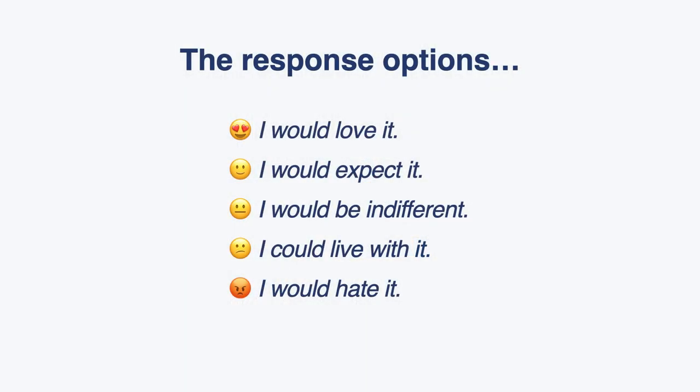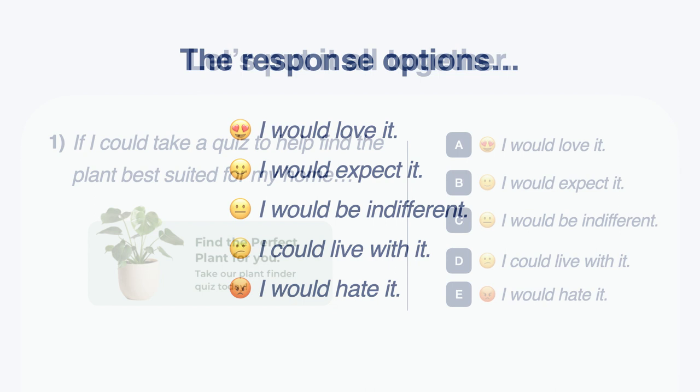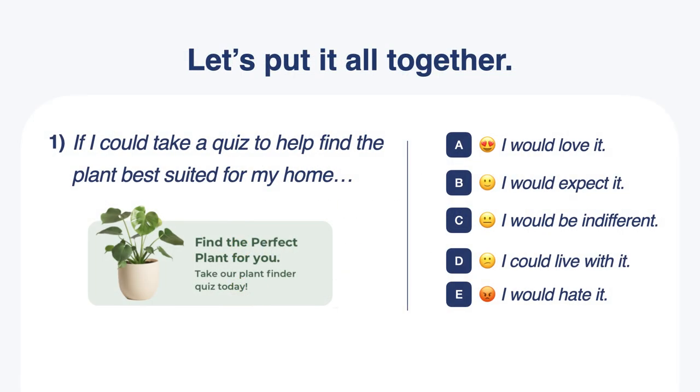In administering a Kano survey, the available responses are uniform across the entire survey. You're asking respondents to report on: if this feature were available, what would your reaction be — ranging from 'I would love it' to 'I would hate it'? And conversely, if this feature were not available, how would you react on that same scale?